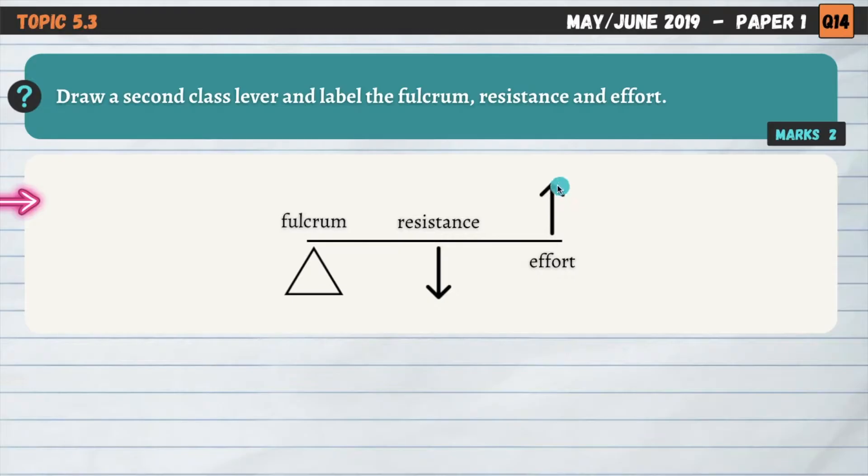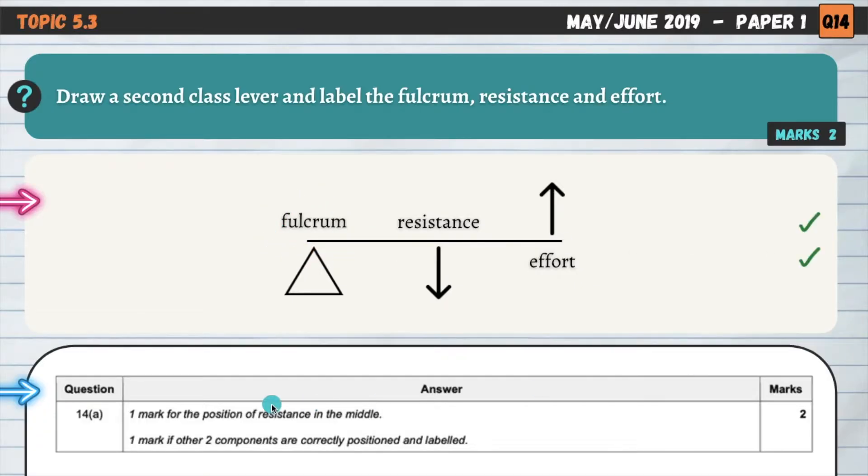So we've got effort, which usually comes from a muscular contraction on one end, and then the fulcrum, which is usually a joint in the human body on the other end. Let's just have a look at the mark scheme. It says one mark for the position of resistance in the middle, and then one mark if the other two components are correctly positioned and labeled. So you will need to label all of the three components to get that second mark.